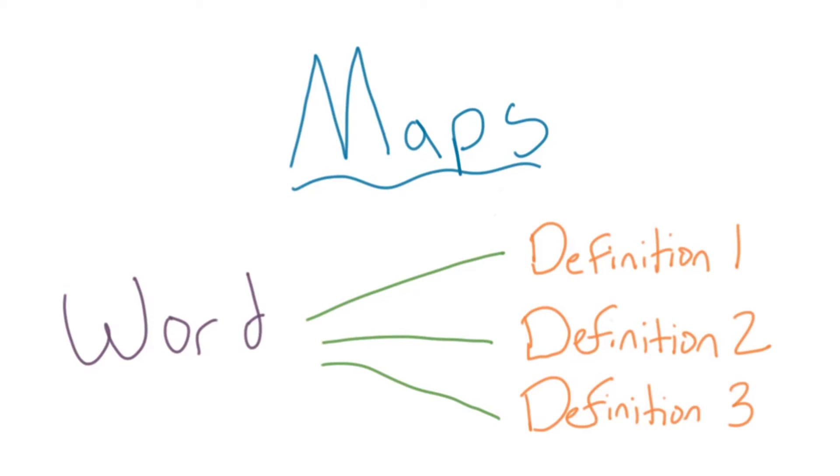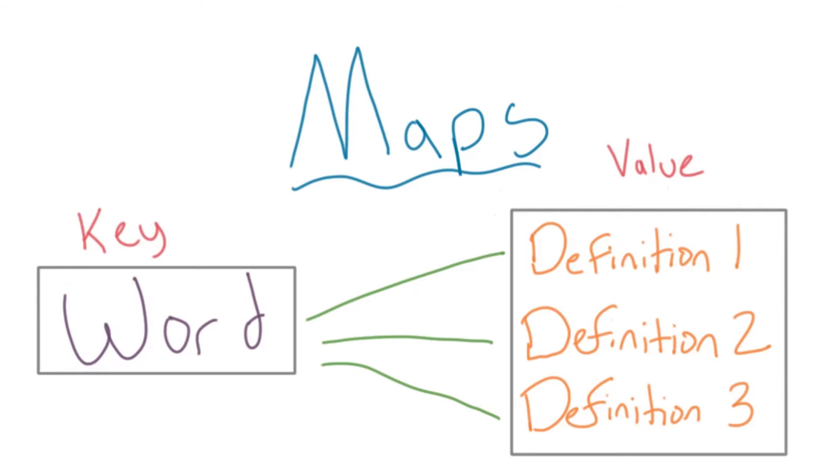Thus, each key only exists once in a map, and a group of these unique keys without any order is called a set.